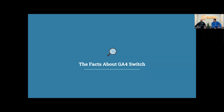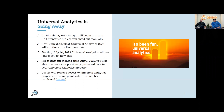Let's start with the facts about the GA4 switch. You all know that Universal Analytics is going away. Some key dates: earlier this month, on the first, Google started creating GA4 properties unless you opted out manually. You'll have until the end of June for Universal Analytics to continue collecting new data. Starting July 1st, UA will no longer collect new data.